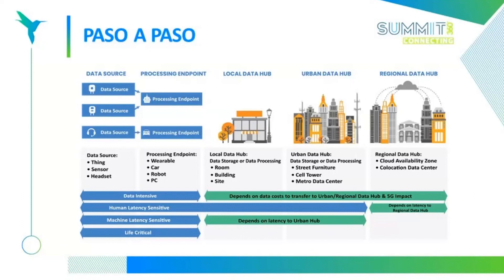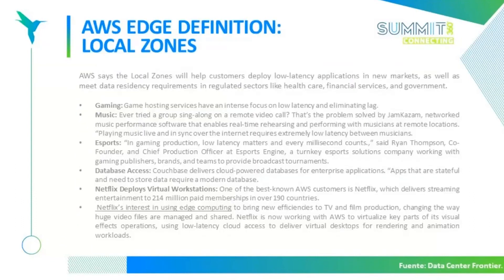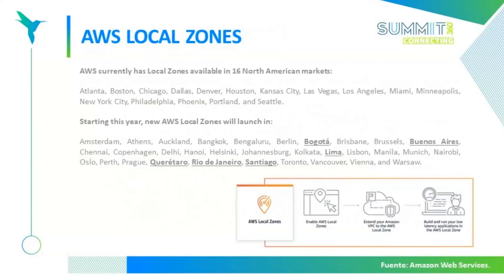Hay fuentes de datos, endpoints de procesamiento, local data hubs o data centers de borde para data urbana requerida, y luego un hub de data regional. Como ejemplo, Amazon Web Services está creando su propio borde, lo que ellos llamaron 'Local Zones': ya crearon 16 zonas en los Estados Unidos y están creando zonas locales en Bogotá, Buenos Aires, Lima, Querétaro, Río de Janeiro y Santiago.